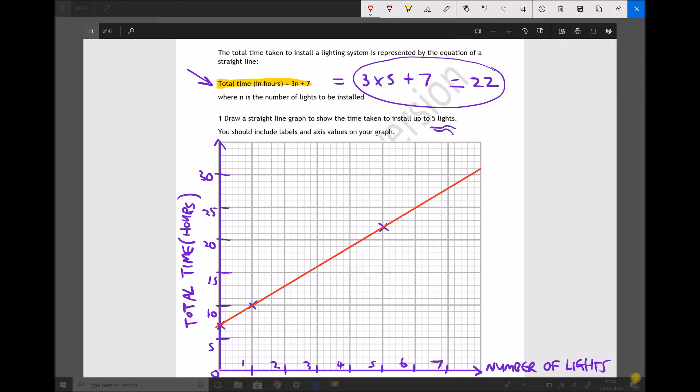Now if you're not sure you can check any of these. Let's say 4 lights as an example to check. We refer to our equation: 3 times 4 is 12, 12 plus 7 is 19. And we see here that when we've got 4 lights we have a time of 19 hours. So we know that the graph we've produced there is accurate. As mentioned, you could plot more points if you felt more comfortable doing it that way, but 2 points is sufficient in order to plot a straight line.